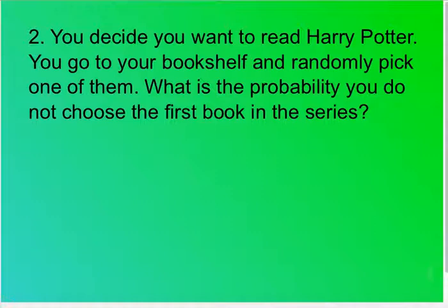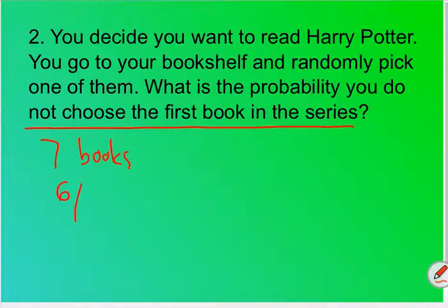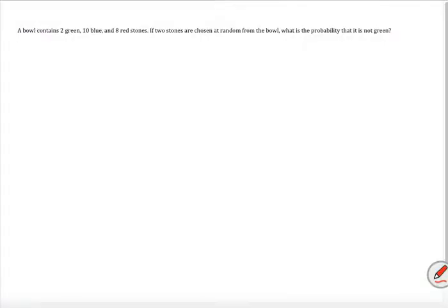You decide you want to read Harry Potter and you go to your bookshelf and randomly pick one. What is the probability that you do not choose the first book in the series? For those that don't know, there are seven books. There are six other books that are not the first, out of seven total, so the probability is six out of seven.